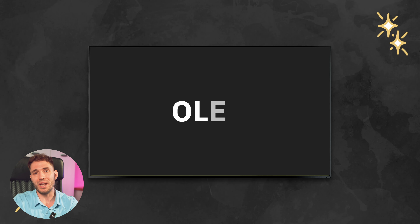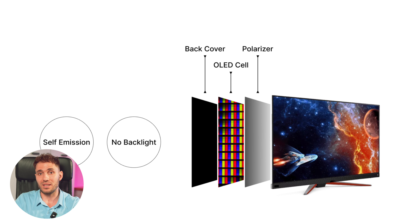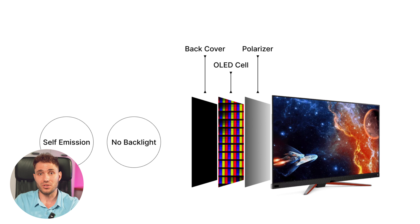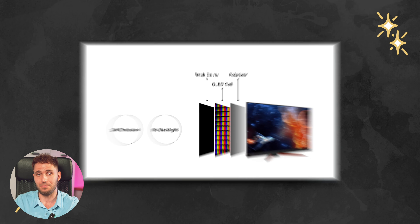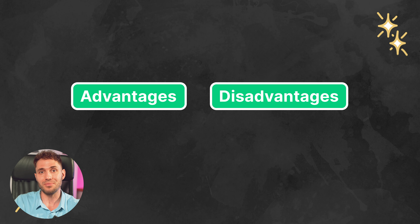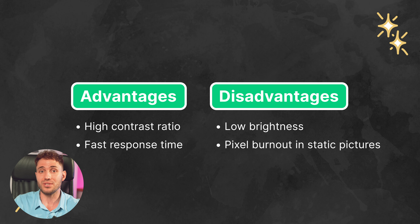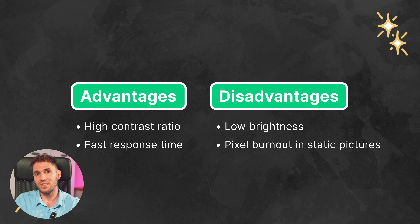The disadvantages include low contrast ratio and long response time. In turn, OLEDs work on the basis of organic LEDs which are self-illuminating, and this makes it possible to adjust the brightness of each pixel separately. The obvious advantages of this type are high contrast ratio and fast response time. The disadvantages include relatively low brightness and pixel burnout in static pictures. When used as a digital sign this drawback is quite unpleasant.